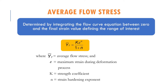Average flow stress is determined by integrating the flow curve equation between 0 and the final strain. We have to differentiate between average flow stress and flow stress. Flow stress is at a certain point, while average flow stress covers the entire process from start to end. It is calculated using: YF-bar equals k epsilon to the power n, divided by 1 plus n. The difference from the flow stress equation is the denominator 1 plus n.